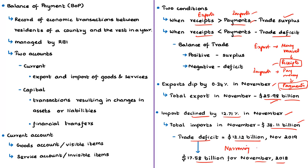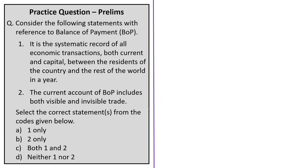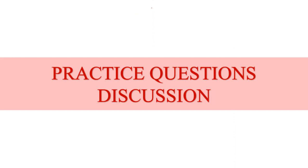With this we have come to the end of discussion of this news article. We discussed the difference between current account and capital account of the balance of payment, then trade deficit, and the present trends with respect to exports and imports of the Indian economy. The displayed practice question will be discussed at the end of the session.